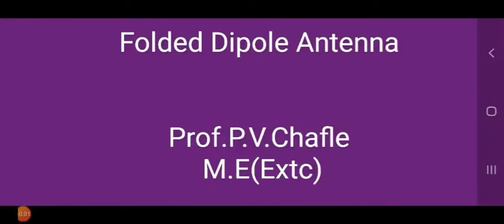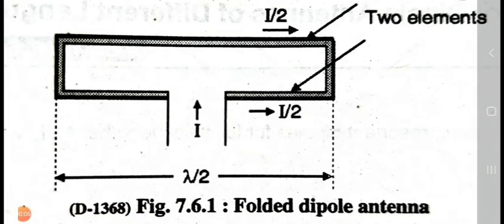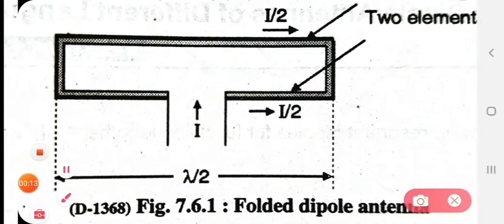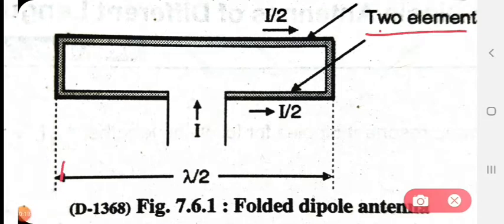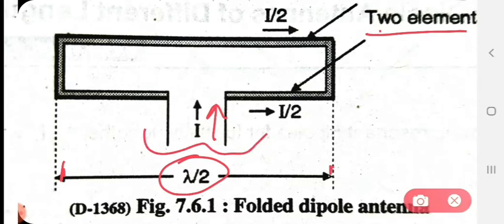Hello students, today we see the folded dipole antenna. This is the diagram for the folded dipole antenna. In this, two elements are there, and the length will be lambda by 2. The current will be passed from this point.